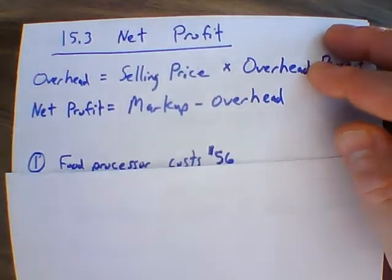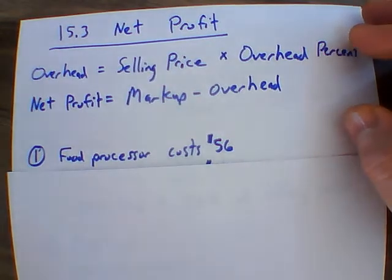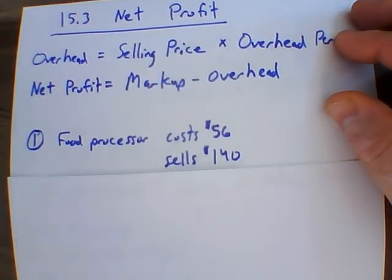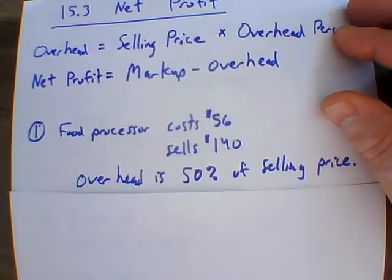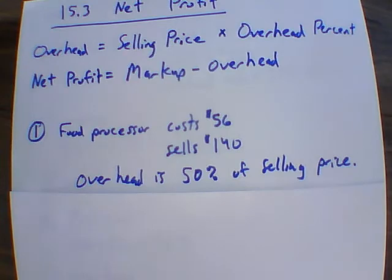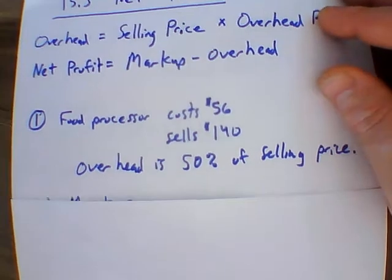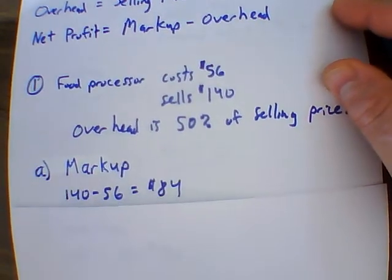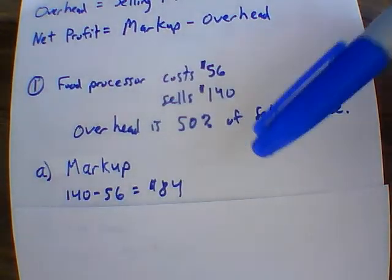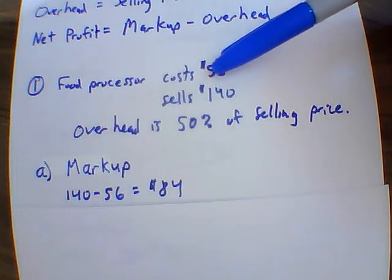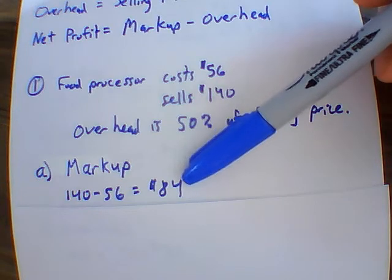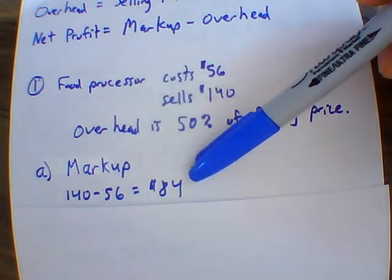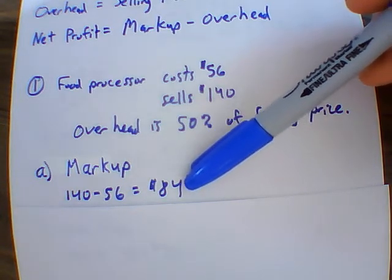In Example 1, a food processor costs fifty-six dollars and sells for one hundred and forty dollars. The overhead is fifty percent of the selling price. For part A, we find the markup by taking the selling price minus the cost: $140 − $56 = $84. That eighty-four dollars is our gross profit.